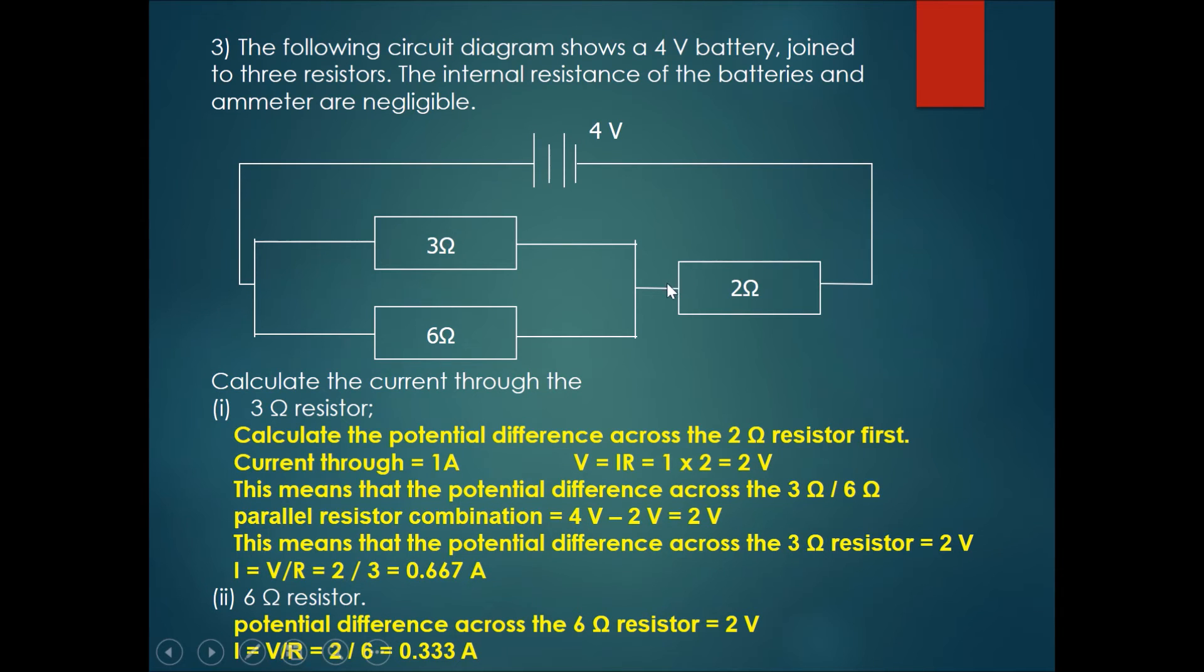So now we already know that the current going through here is 1 ampere. Once we have this information, now we know there's a current going through and there's a resistor.